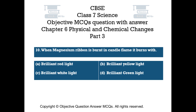Question number 10. When magnesium ribbon is burnt in candle flame, it burns with: Option A brilliant red light, Option B brilliant yellow light, Option C brilliant white light, Option D brilliant green light. The right answer is Option C — brilliant white light.